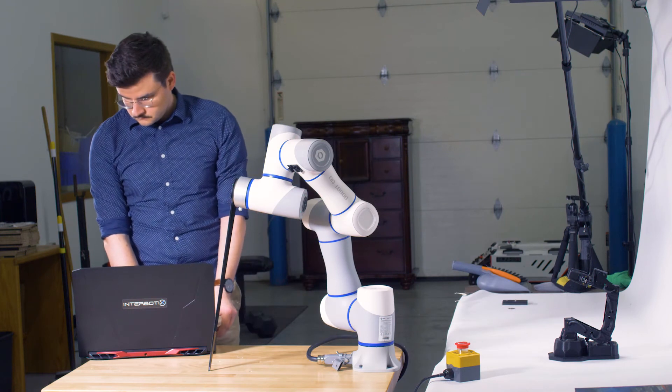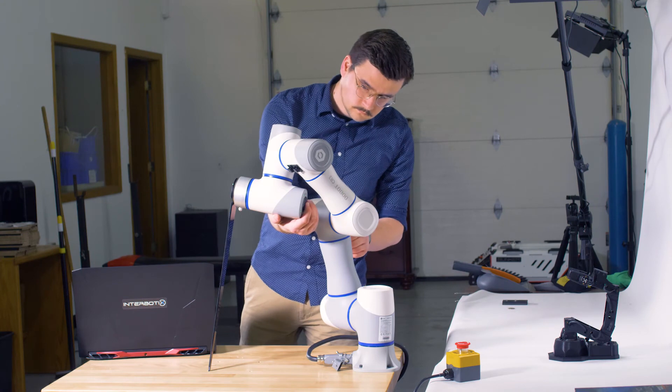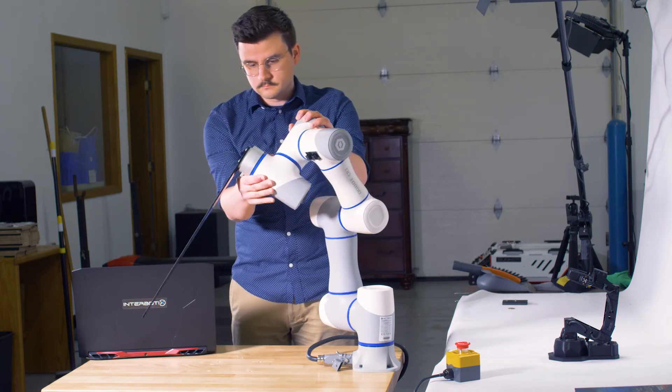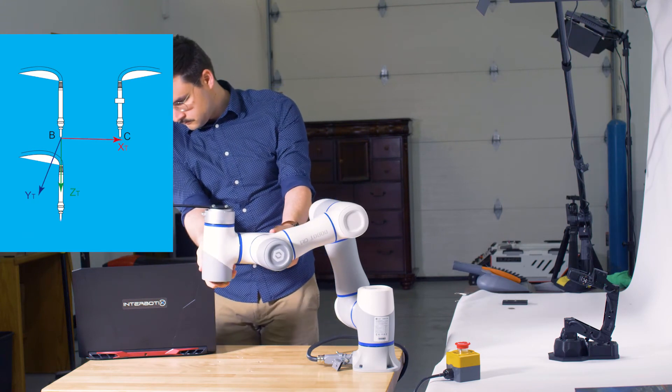Once all three positions have been set, we can move to pose calibration. Calibrating the pose requires the user to specify three orientations that will define the tool coordinate system's X, Y, and Z directions.